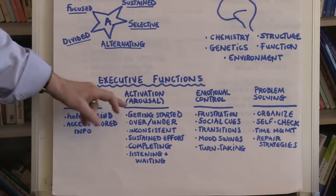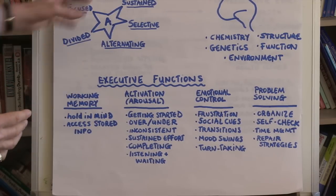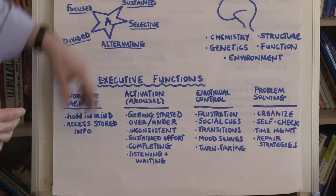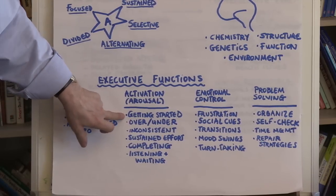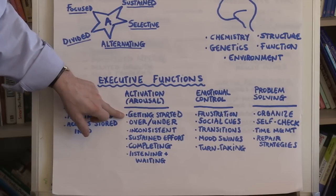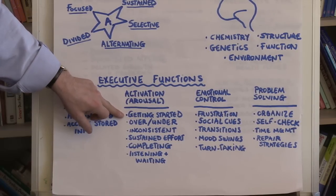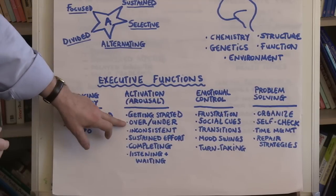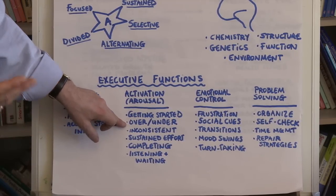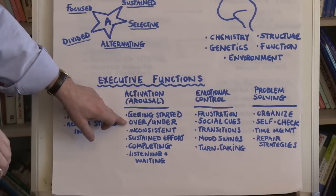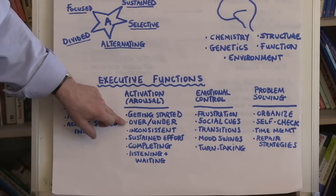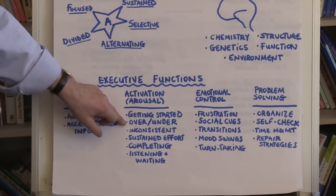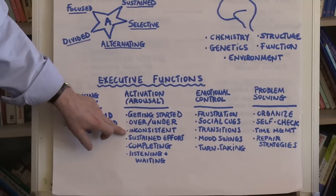Activation or arousal is another aspect very common, particularly in hyperactive, impulsive type individuals with ADHD. So getting started, they often are procrastinators, or they don't know how to get started. They may start doing something, but they may start in the wrong place or in the wrong way. They may be over aroused or under aroused. So for example, they may be ready to jump, or they may be inattentive and need to be prompted to jump to start an activity.